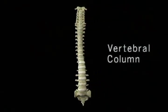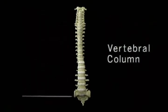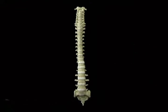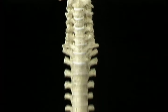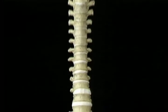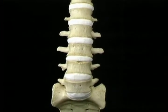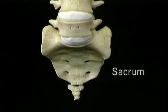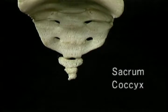Here's the vertebral column. It consists of 24 separate vertebrae, the sacrum, and the coccyx. There are seven cervical vertebrae, twelve thoracic vertebrae, and five lumbar vertebrae. The sacrum consists of five vertebral segments fused together. The coccyx, our vestigial tail, consists of three or four tiny segments.